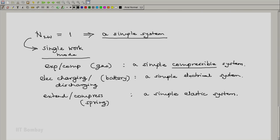We should notice that only simple systems can be described thus using a single adjective like a simple compressible system or a simple electrical system or a simple elastic system. Complex systems will need more than two or two or more adjectives.